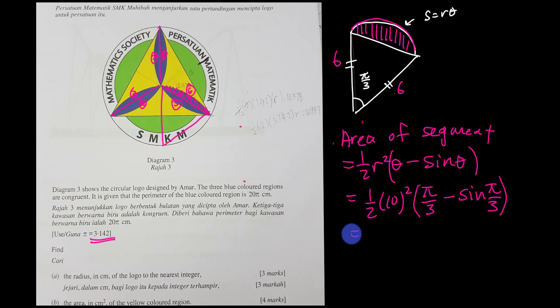Make sure your calculator is in radian mode. Entering 3.142/3 minus sin(3.142/3), then multiplying by 50, gives a nice answer.